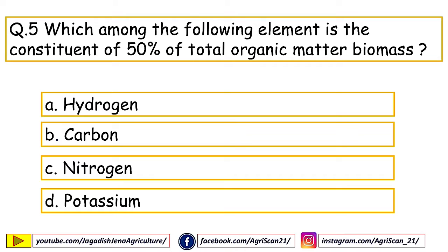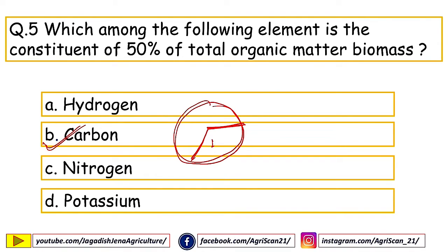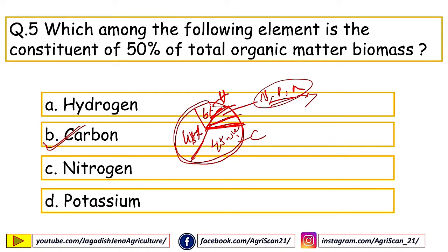Next question: which element constitutes 50% of total organic matter biomass? Options are hydrogen, carbon, nitrogen, potassium. The right answer is carbon. Organic matter contains around 45–50% carbon, 40–45% oxygen, around 6% hydrogen, and the remaining 3–4% consists of all other nutrients. Carbon has the most important composition, followed by oxygen and hydrogen.